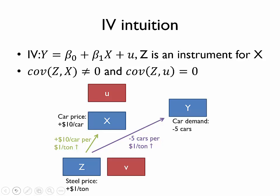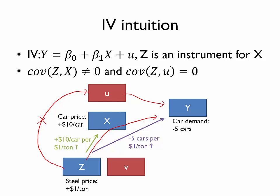But we might wonder why would an increase in the price of steel affect the demand for cars in this way? Well, remember that steel price is exogenous, meaning steel price should not be related to the error term. In other words, we don't think that steel price is related to any factor which directly affects demand for cars. So we seem to have eliminated this pathway. However, it does seem quite plausible that the price of steel could affect the price of cars, and that in turn affects the demand for cars. So if it's the case that this increase in the price of steel is affecting demand for cars only through its effect on the price of cars.